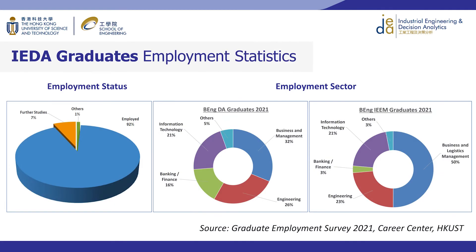Around 92% of our students get employed right after graduation. 7% pursue further study in top universities in the US, UK, or other regions. As you can see from the design of our core, we also provide our students with the right foundation for postgraduate studies. IEDA has negotiated terms to secure spots at top universities for IEDA graduates with high GPAs — for example, students can go to Columbia University and enroll in very high-level master programs. Our graduates are in high demand in a wide range of sectors, including banking and finance, and business and management.